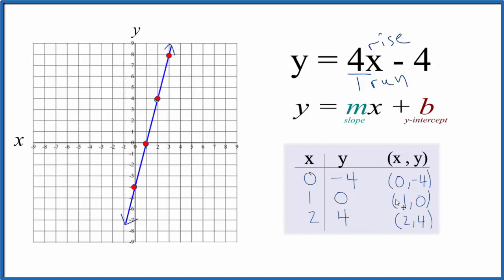So we've done this first part correctly. This is the graph for y equals 4x minus 4.